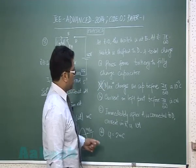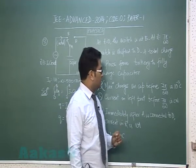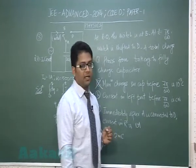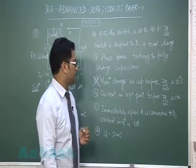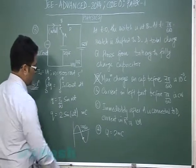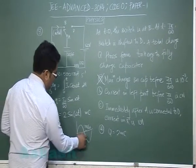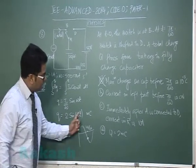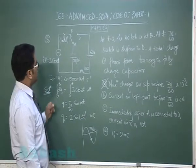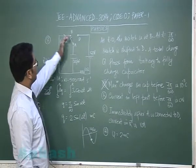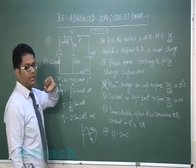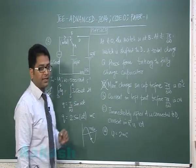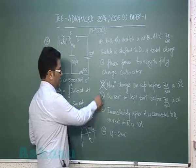Regarding the current direction in the left part before 7pi by 6omega: since 7pi by 6omega is past the pi by omega point, the current direction has reversed. So if it was initially clockwise, at 7pi by 6omega it is anticlockwise — making the statement that it is clockwise incorrect.